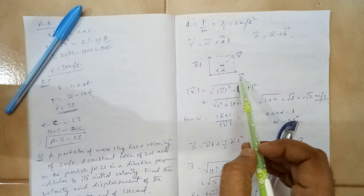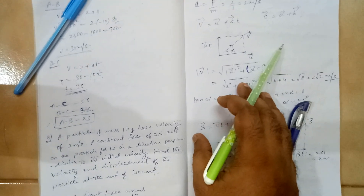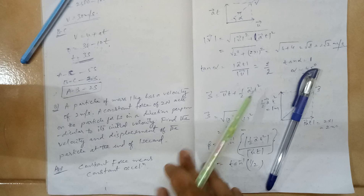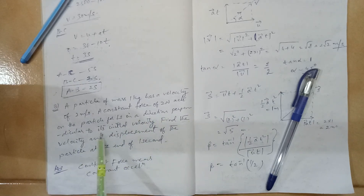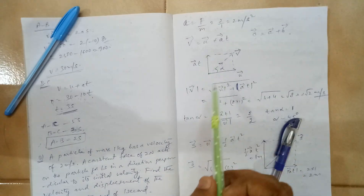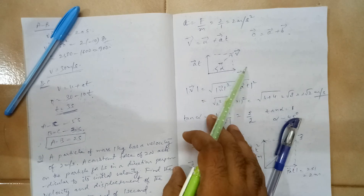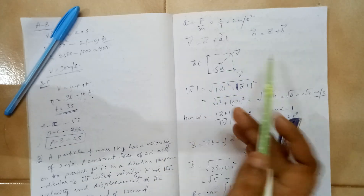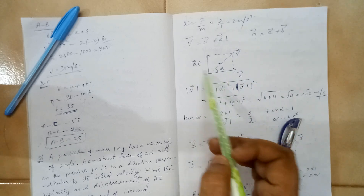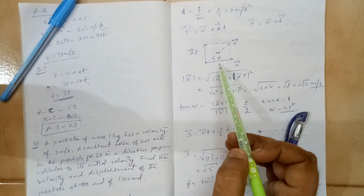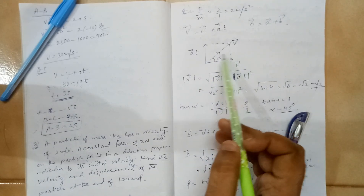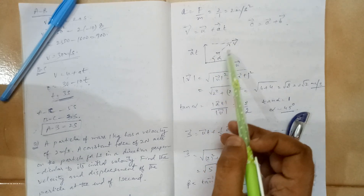Here, u vector is in the x-direction, and the question says the force acts perpendicular to the initial velocity — that is, 90 degrees to that direction. So what will be our v vector, the final velocity? It will be the vector addition of these two vectors. If you add this vector to this vector, you get the resultant vector. To find the magnitude, you use the hypotenuse: the square of one side plus the square of the other side equals the square of the resultant.